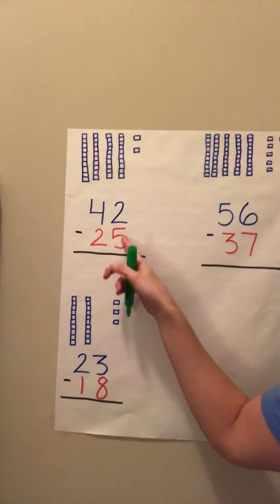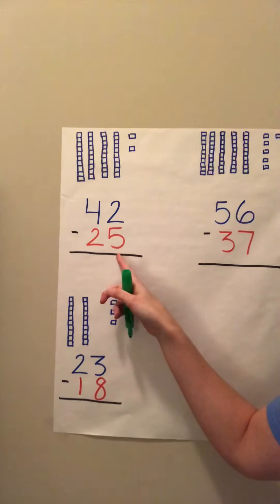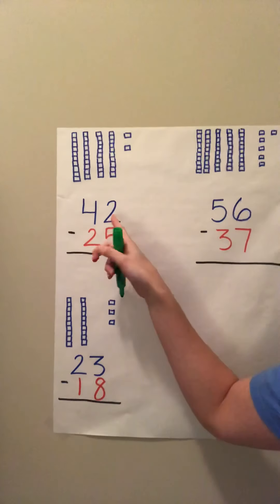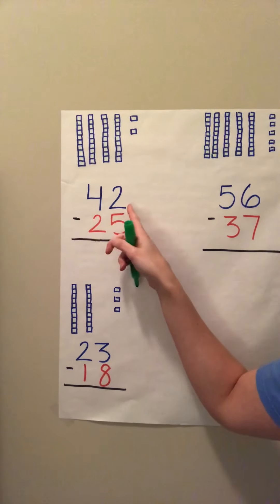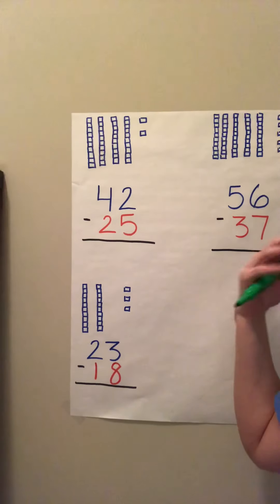Hey scholars, so today we're going to introduce something called borrowing when we're subtracting. Borrowing is when we do not have enough in our ones to take away. So if we have two, do we have enough to take five away from two? No. So we're going to be talking about what you do when you cannot subtract a number from it.